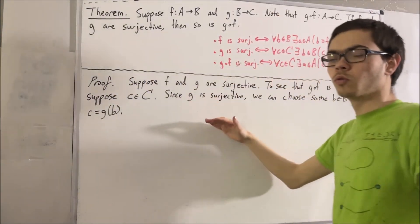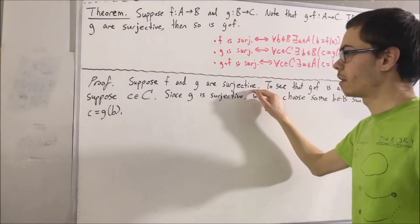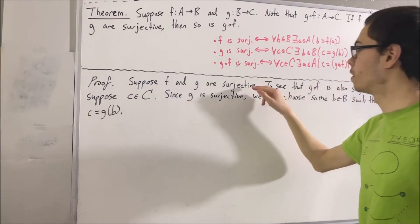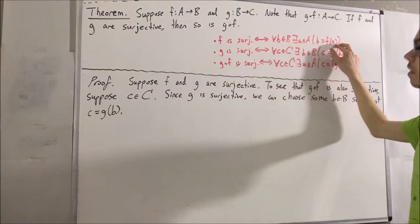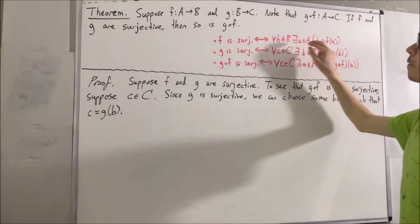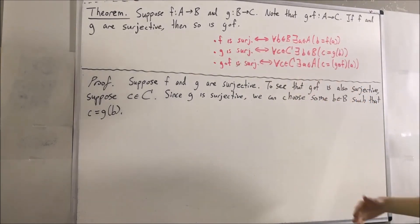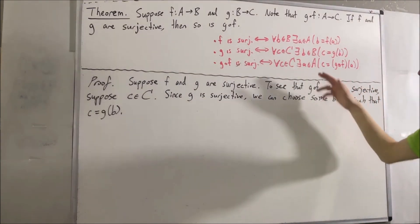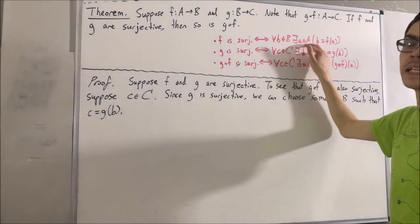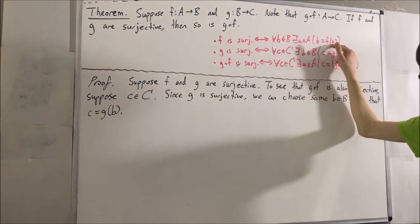And now we can use the fact that f is surjective. What does it mean for f to be surjective? Well, it means that this first statement is true, and this statement works for every element in B. So it must work for the b that we have in our proof. So we can conclude that we can choose some element a in A such that b equals f of a.